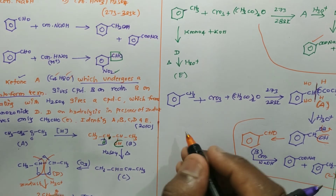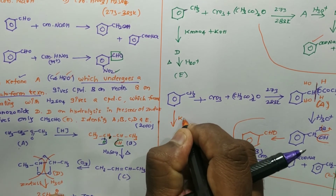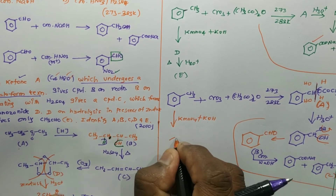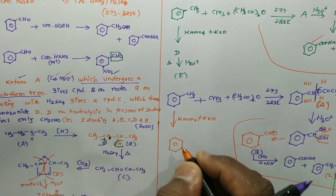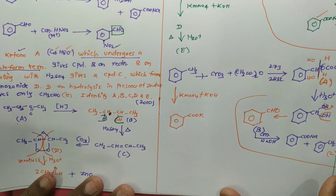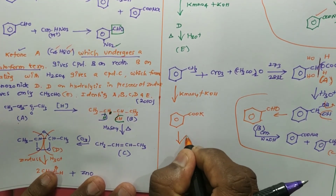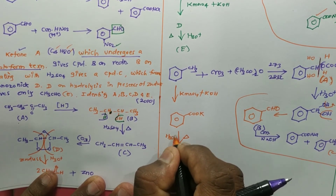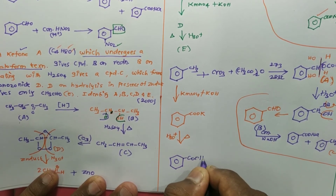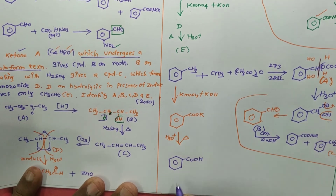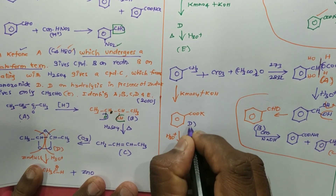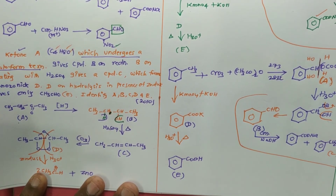Now we have to find out D and E. When benzyl alcohol reacts with KMnO4, a strong oxidizing agent, in presence of KOH, I will be getting product D — which is potassium benzoate (COOK). On heating and hydrolysis, this gives benzoic acid (COOH) as product E. So my product D is potassium benzoate and E is benzoic acid.